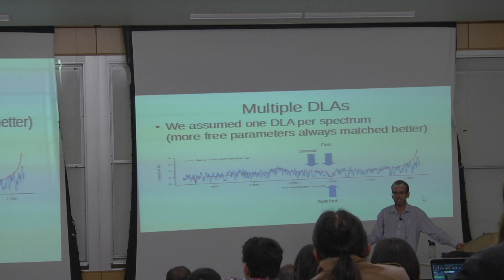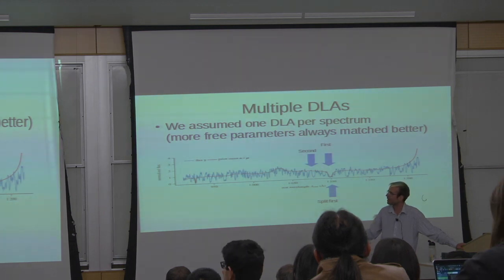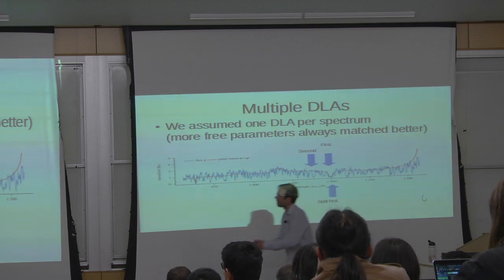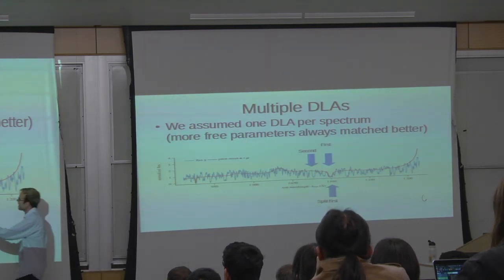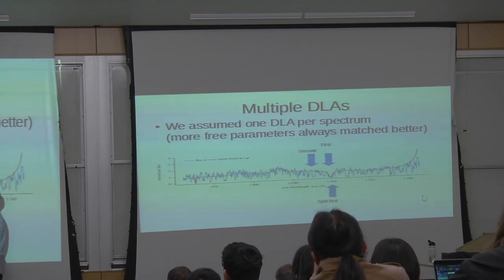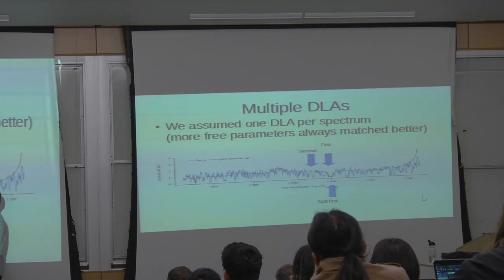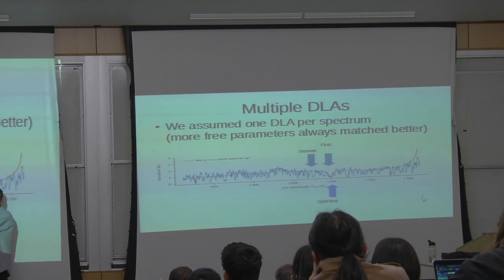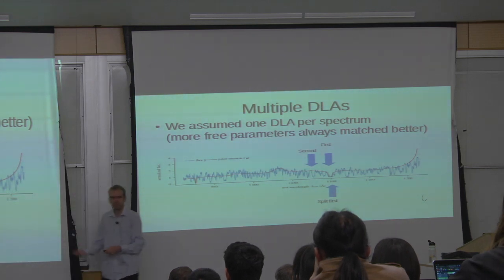You have more freedom to fit your data. It would find one DLA and say: this red line with the absorber doesn't quite go through the blue lines. What if this were not one object but two objects pretty close together? Then I would get a better match because I'd be matching to the noise a little bit better. So this was a problem.